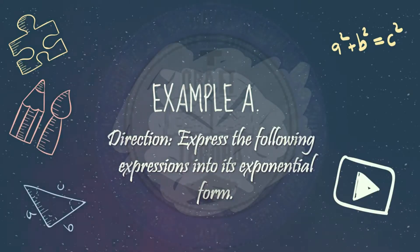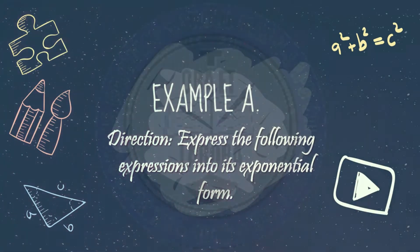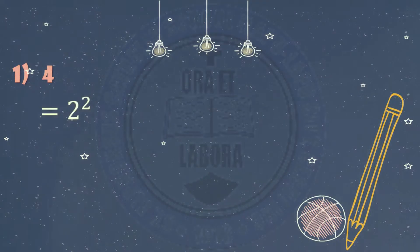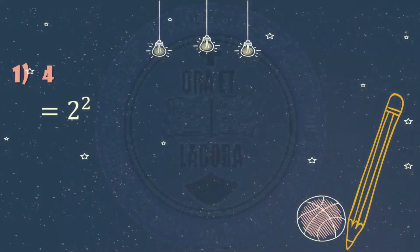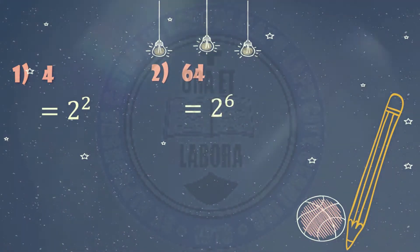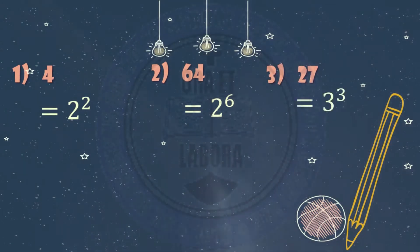In our first set of examples, we are going to express the following expressions into exponential form. Number 1: 4 — the answer is 2 squared. Number 2: 64 — the answer is 2 raised to 6. Number 3: 27 — the answer is 3 raised to 3, or 3 cubed.